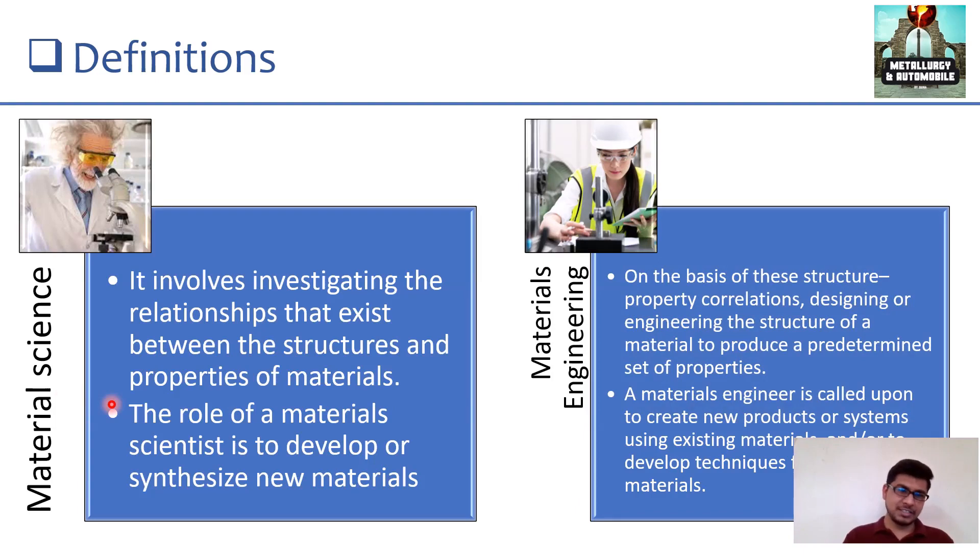In Material Science, it involves investigating the relationships that exist between structures and properties of materials. That means, scientists are mainly focused on what is the structure of material based on what property it will execute. It is very important that every material's property depends on its structure.